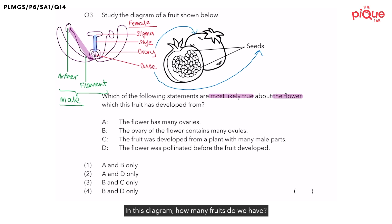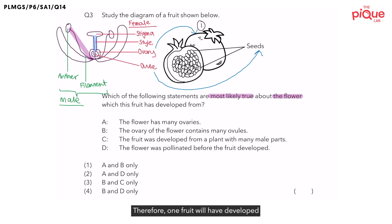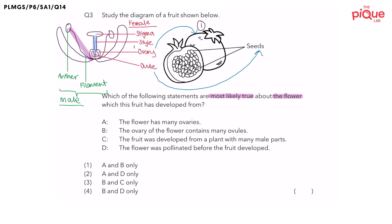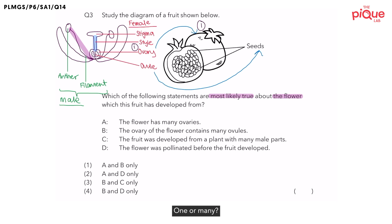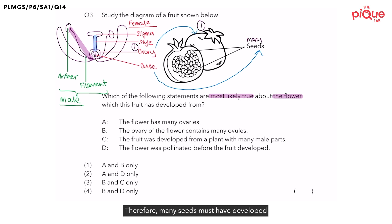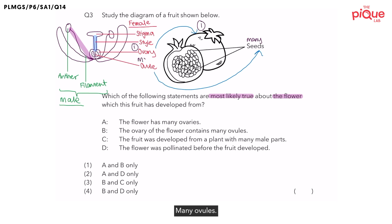In this diagram, how many fruits do we have? We only have one fruit. Therefore, one fruit will have developed from only one ovary. And how many seeds does this fruit have — one or many? The fruit has many seeds. Therefore, many seeds must have developed from many ovules.